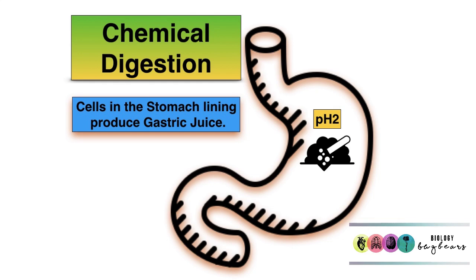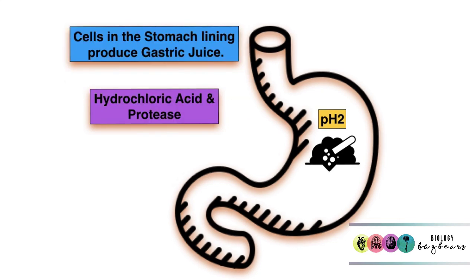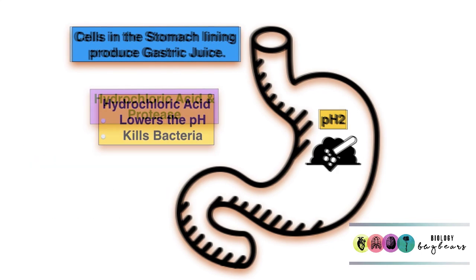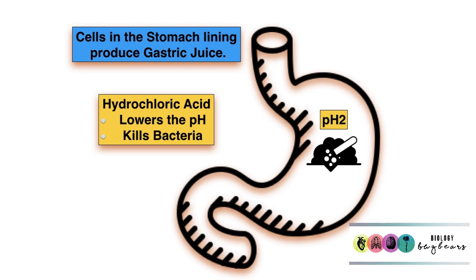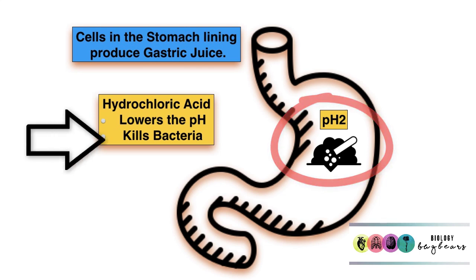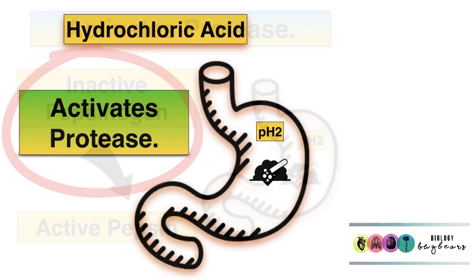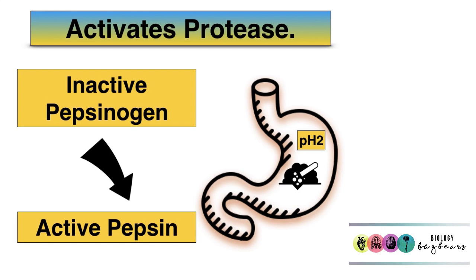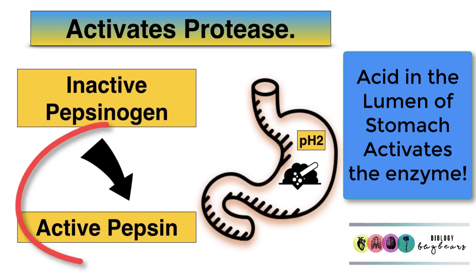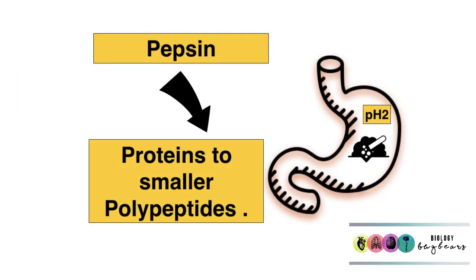Chemical digestion takes place in the stomach. Cells lining the stomach produce gastric juice, which contains hydrochloric acid and a protease — an enzyme that breaks down proteins. The hydrochloric acid lowers the pH of the stomach to around 2 and kills bacteria. Hydrochloric acid is essential for activating the protease, because the protease is secreted in an inactive form called pepsinogen, and it's only when it mixes with hydrochloric acid in the lumen of the stomach that it is converted to the active form, pepsin. Pepsin breaks down proteins into smaller polypeptides.